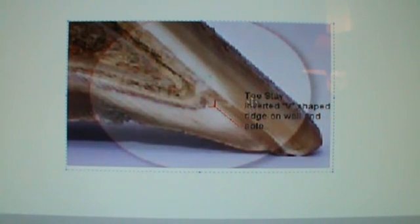Now again, I put this writing here, Toastay, inverted V-shaped ridge on the wall and sole. Actually, it's part of the sole here.